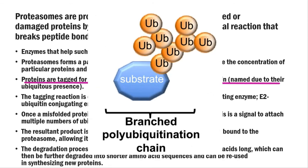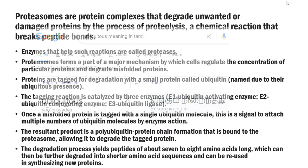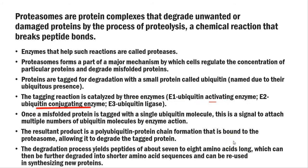The name ubiquitin is given due to the ubiquitous presence of this particular protein in the cell system. The tagging reaction is catalyzed by three enzyme systems: E1, which is a ubiquitin activating enzyme; E2, which is a ubiquitin conjugating enzyme; and E3, which is a ubiquitin ligase enzyme.